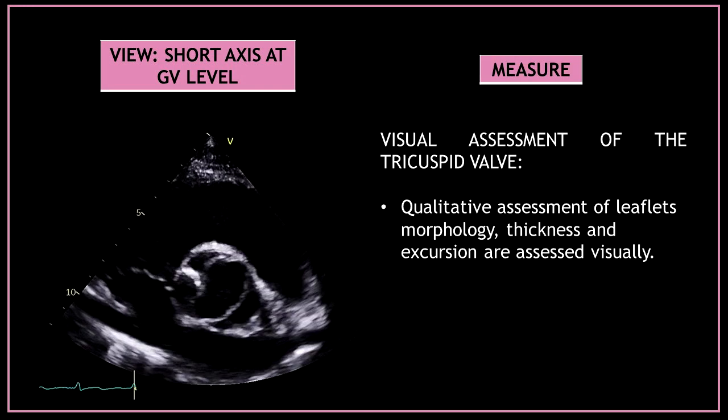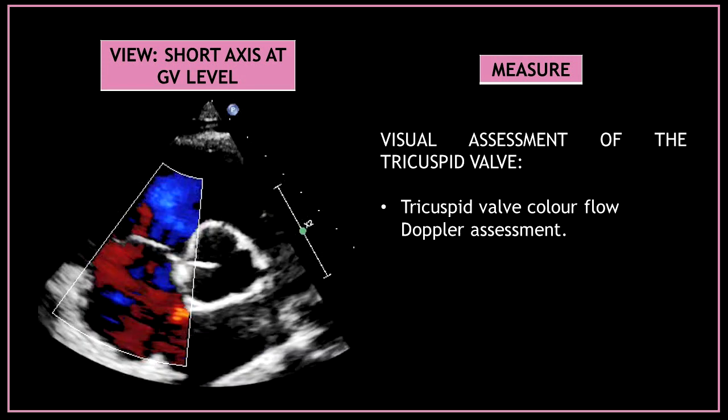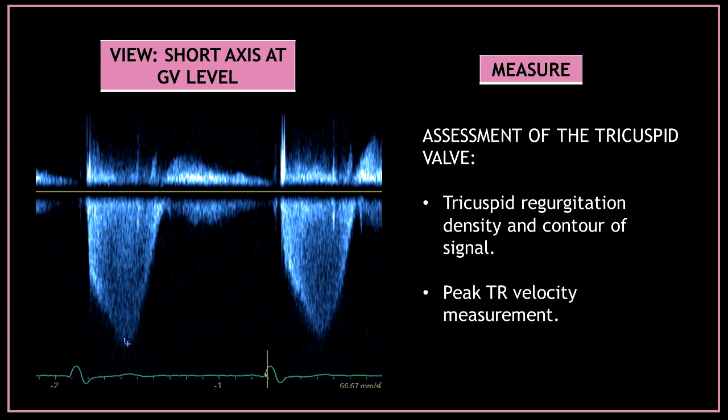Now let's move to the tricuspid valve and do a visual assessment of the leaflet morphology, thickness, and excursion. Use color Doppler to assess the color flow across the tricuspid valve. Finally, use continuous wave Doppler across the tricuspid valve — assess the tricuspid regurgitation density and contour of the signal, and measure the peak tricuspid regurgitation velocity.